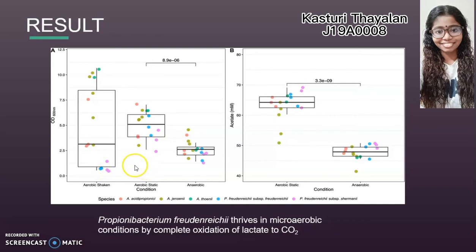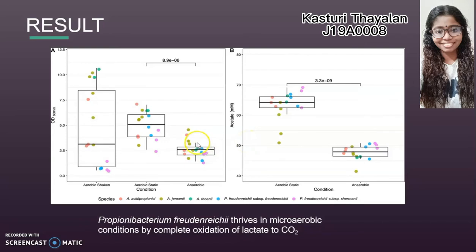Let me continue with the results. We can see two graphs here. Graph A represents biomass production while Graph B represents acetate production for four species of propionic acid bacteria growing in three different conditions. Each data point represents the average of biological duplicates for each individual strain. There is a significant difference in optical density values between anaerobic and aerobic conditions.